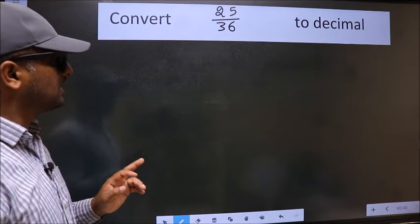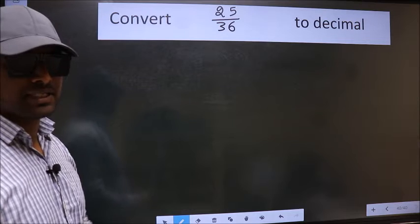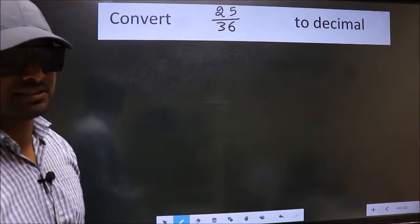Convert 25 by 36 to decimal. To convert to decimal, we should divide. And to divide, we should frame it in this way.